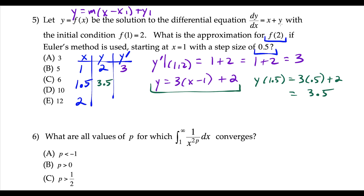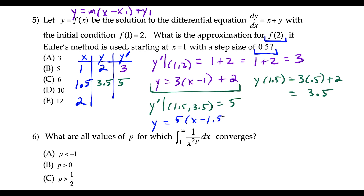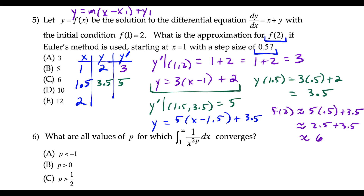Now we plug (1.5, 3.5) into our derivative to get our new slope: 1.5 plus 3.5 equals 5. We write another tangent line equation: y equals 5 times (x minus 1.5) plus 3.5. To approximate f of 2: 5 times (2 minus 1.5) is 5 times 0.5, which is 2.5, plus 3.5 equals 6. So our approximation is choice C.